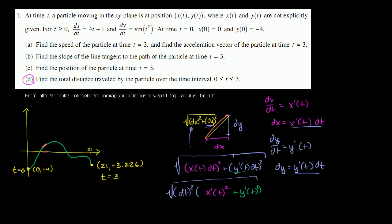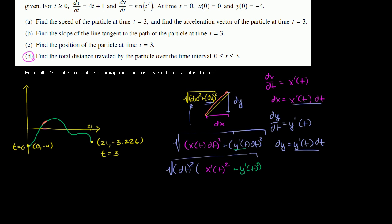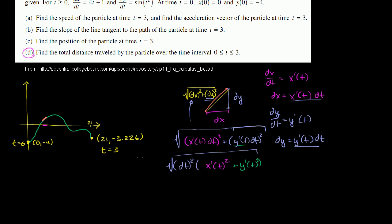You can factor out a dt². This is equal to dt² times x'(t)² + y'(t)². Then you can factor out the dt from the radical sign. The square root of dt² is just dt. This simplifies to √[x'(t)² + y'(t)²] dt.